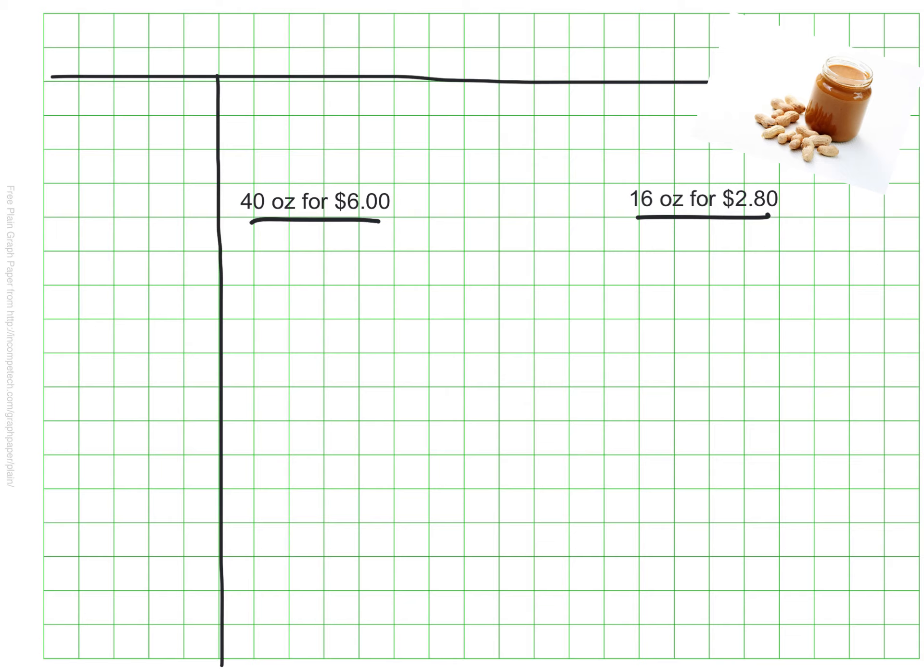To do this, I'll see how much one ounce of peanut butter costs from each jar to know which is cheaper. The larger jar is $6 for 40 ounces, but I want to find out how much one ounce costs so I can compare it to one ounce of the smaller jar. To do that, I'm going to scale down by dividing by 40.